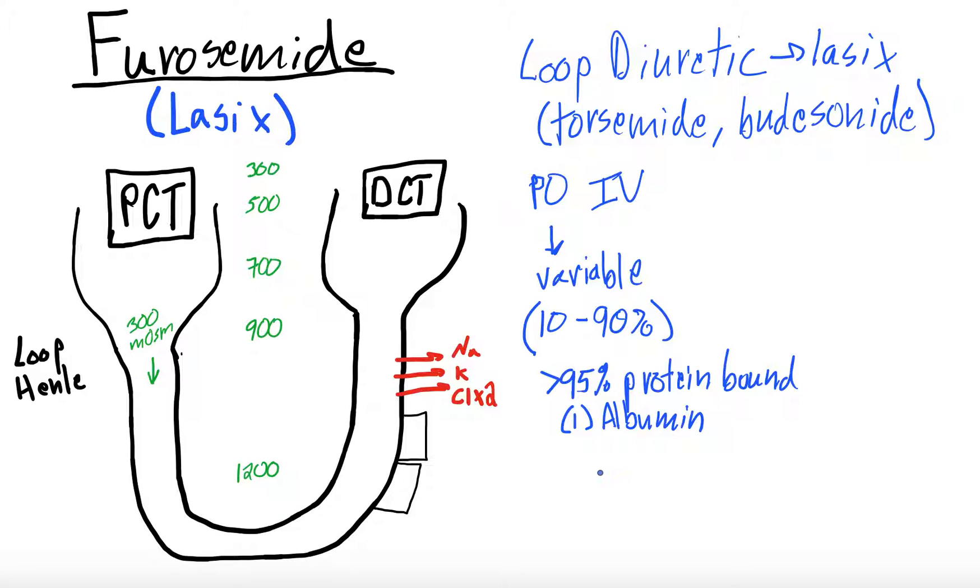So, one thing that affects bioavailability is albumin. If you're hypoalbuminemic and you have less protein to make Lasix protein-bound, you will have less protein-bound Lasix getting into the proximal convoluted tubule to do its job. In addition to that, furosemide has to be transported into the proximal convoluted tubule to then get to the loop of Henle to do its job.